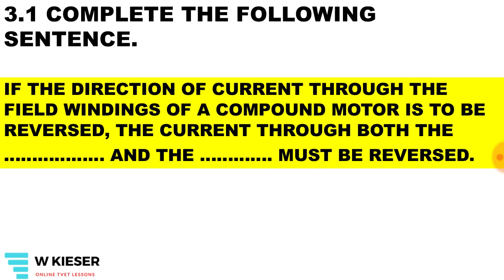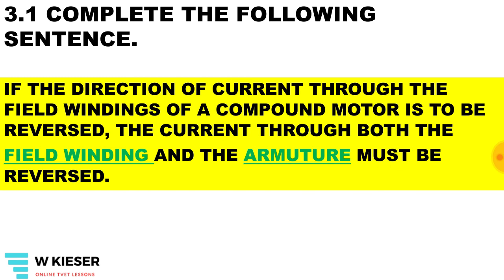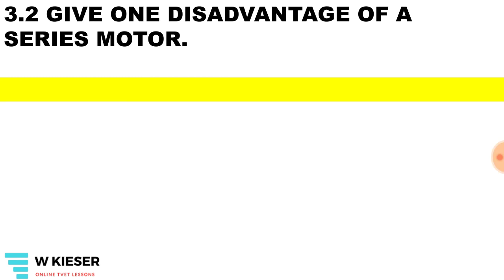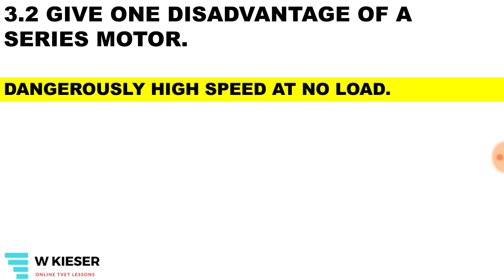Complete the following sentence. The direction of current through the field windings of a compound motor is to be reversed; therefore the current through both the field winding and the armature will also be reversed. Give one disadvantage of a series motor: it is dangerously high speed at no-load conditions.